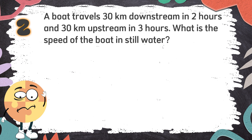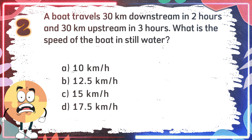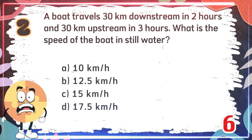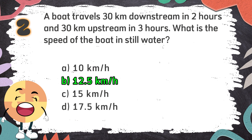Number 2: A boat travels 30 kilometers downstream in 2 hours and 30 kilometers upstream in 3 hours. What is the speed of the boat in still water? The choices are: A. 10 kilometers per hour, B. 12.5 kilometers per hour, C. 15 kilometers per hour, D. 17.5 kilometers per hour. The correct answer is B. 12.5 kilometers per hour.